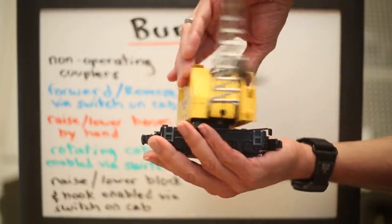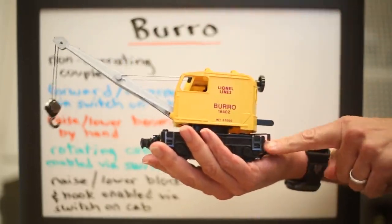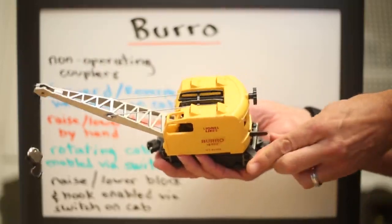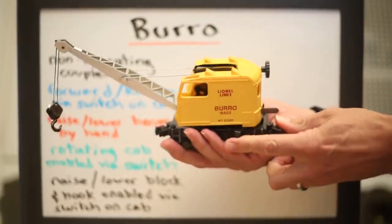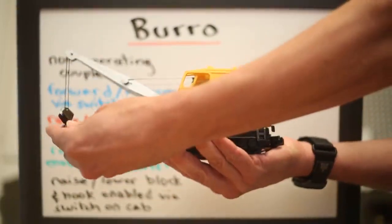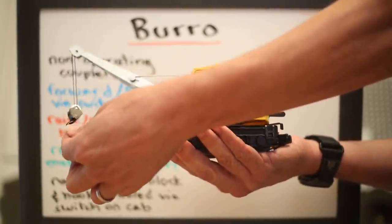The cab rotates. It's enabled by this switch here. And you can raise and lower the block and hook.